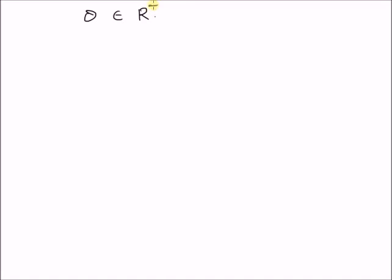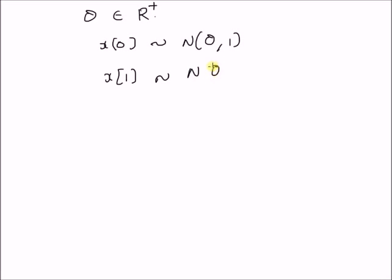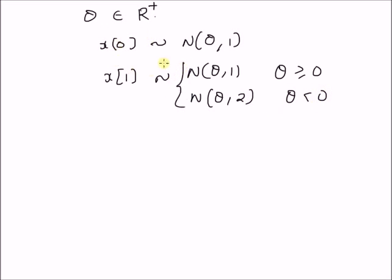Consider a real positive value theta, where theta belongs to the set of real values. We have two observations with the following distributions: x₀ has a normal distribution with mean equal to theta and variance equal to 1. We have another observation x₁ that has two distributions: for non-negative theta, it has a normal distribution with mean theta and variance 1, and for negative theta, it has a normal distribution with mean theta and variance equal to 2.